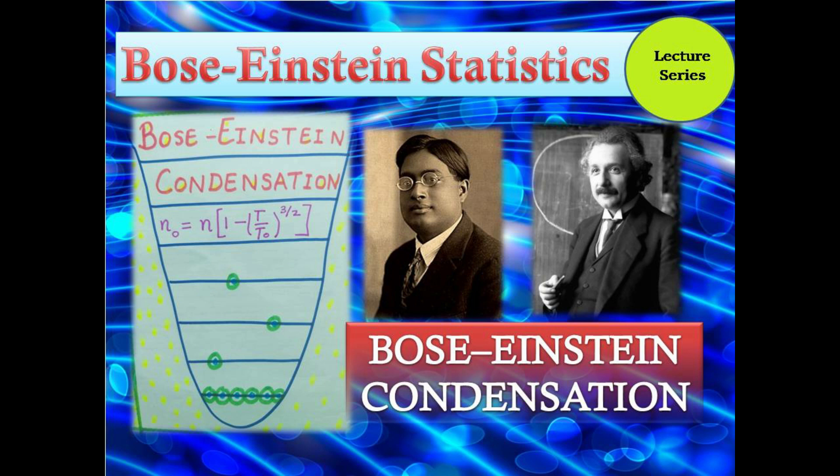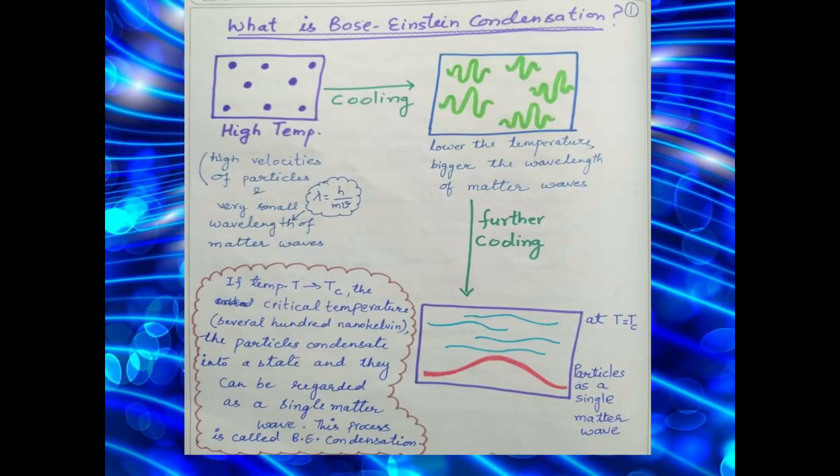Bose-Einstein condensation was predicted by Albert Einstein in 1925 based on previous work done by Indian physicist S.N. Bose. Bose-Einstein condensation is characterized by the fact that the particles form one big quantum mechanical wave. It is a phase transition when a gas of particles is cooled down to a very low temperature.